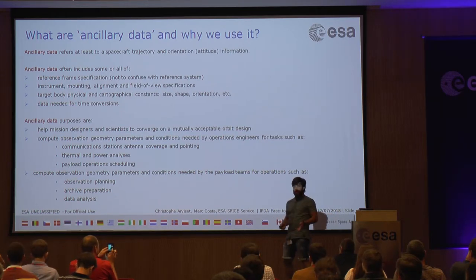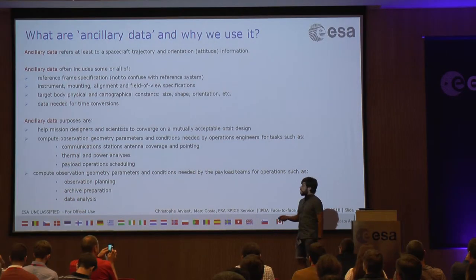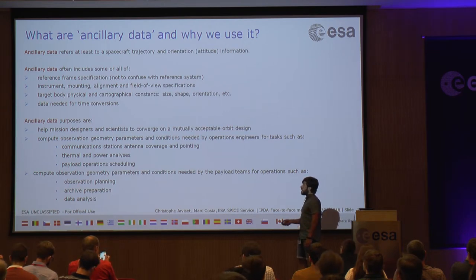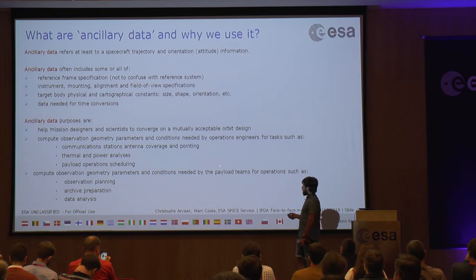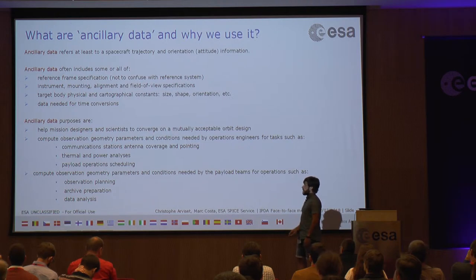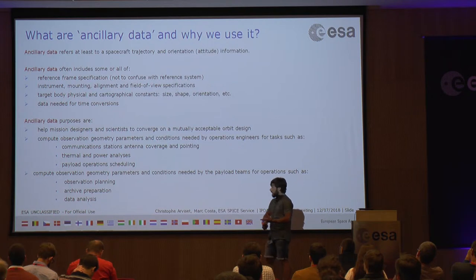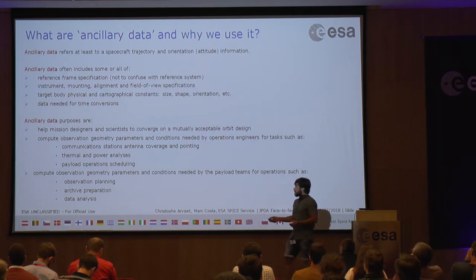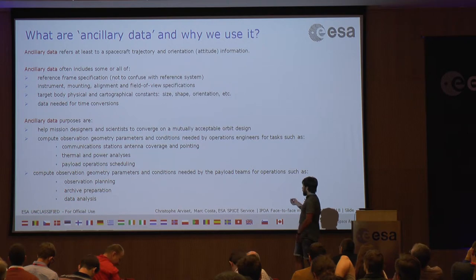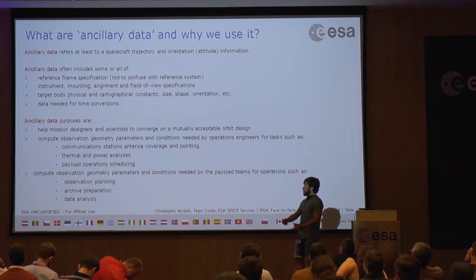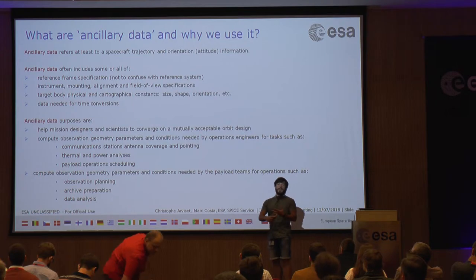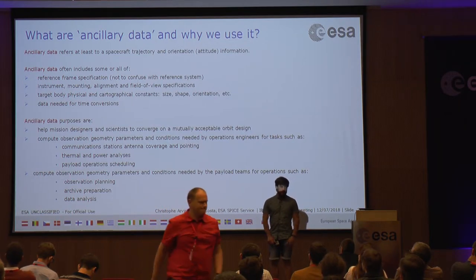The purpose of ancillary data is basically to help mission designers and scientists converge on a mutually acceptable orbit design, to compute the geometry of observations, and the conditions needed by operations engineers to do tasks such as communications antenna coverage and pointing, thermal and power analysis, payload operations scheduling. It's also needed by payload teams to do observation planning, archive preparation, and data analysis. We need ancillary data for everything in space missions.